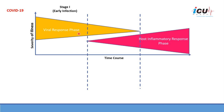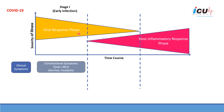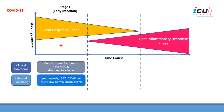In the first stage, representing early infection, patients may have constitutional symptoms — fever, diarrhea, or headaches. Laboratory findings may include lymphopenia, increased PT, increased D-dimer, LDH elevation, and low to normal procalcitonin levels.